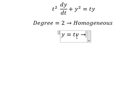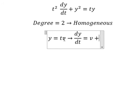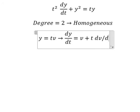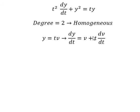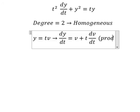If we take the first derivative of both sides, we have dy/dt. The derivative of t is 1, so we have v, and the derivative of v gives us dv/dt. That is the product rule of derivative: dy/dt = v + t(dv/dt).